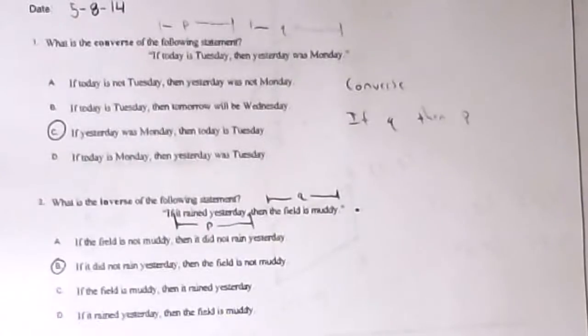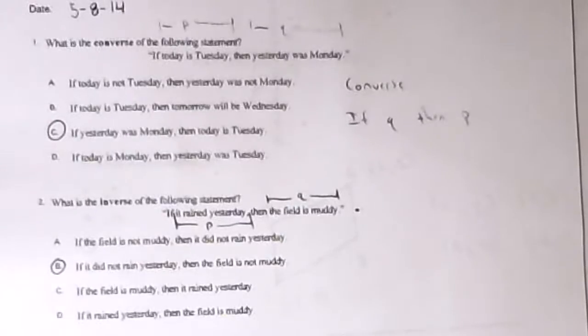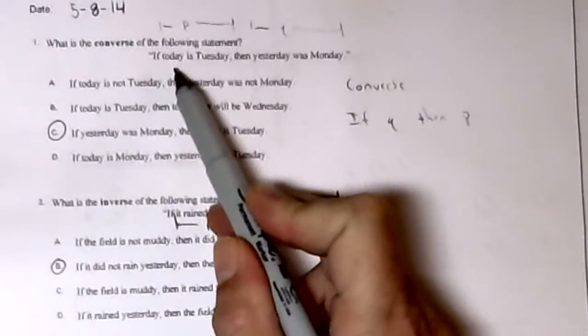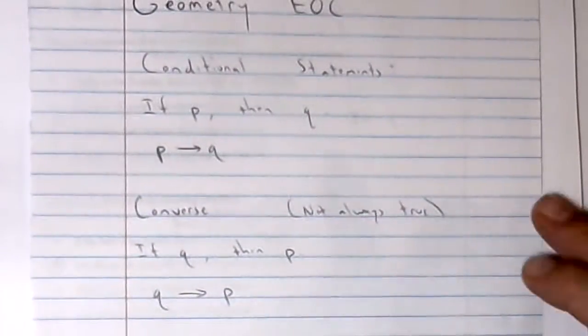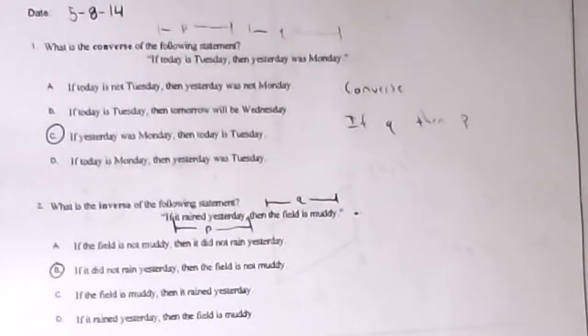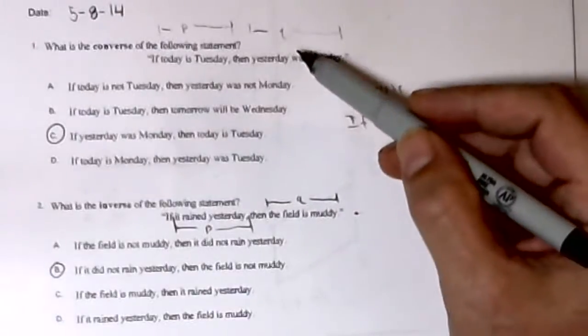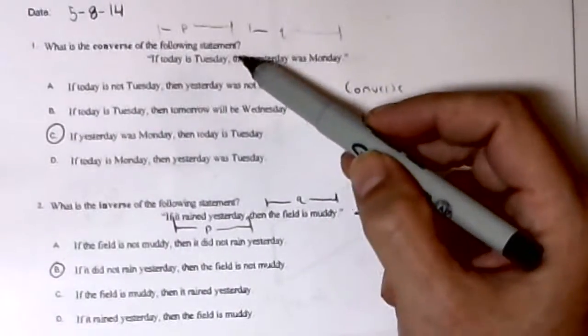The first question asks: what is the converse of the following statement? The original statement is: if today is Tuesday, then yesterday was Monday. P is 'today is Tuesday' and Q is 'yesterday was Monday.' According to our conditional statements, our converse will be if Q, then P — so we reverse our hypothesis and conclusion. The converse is: if yesterday was Monday, then today is Tuesday.